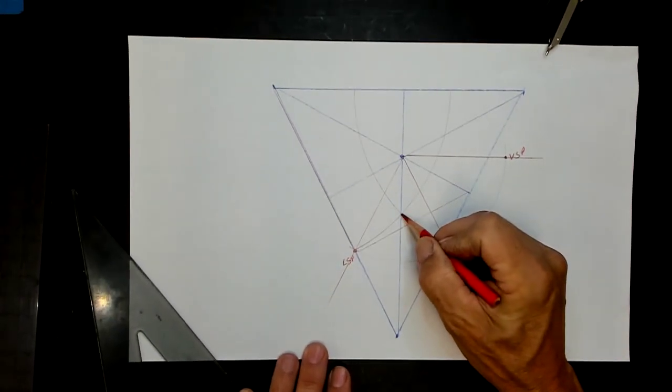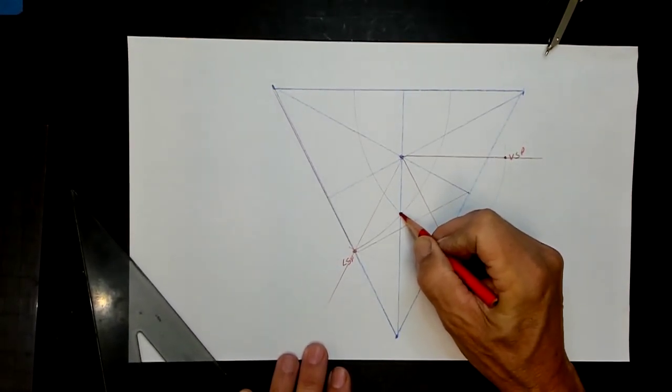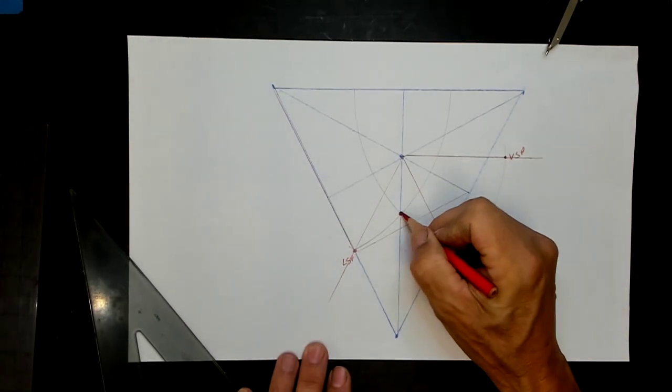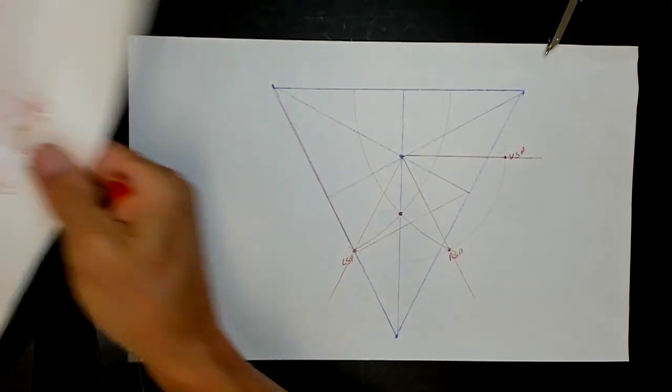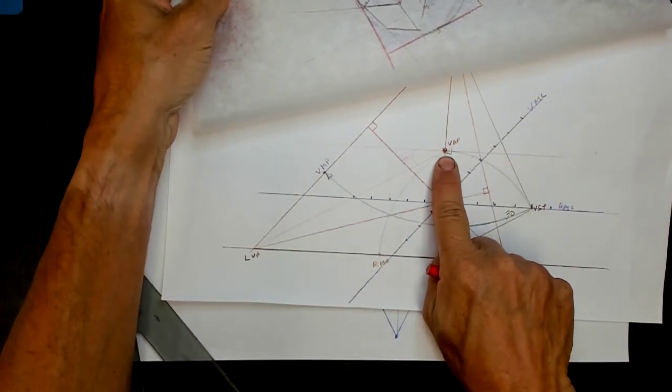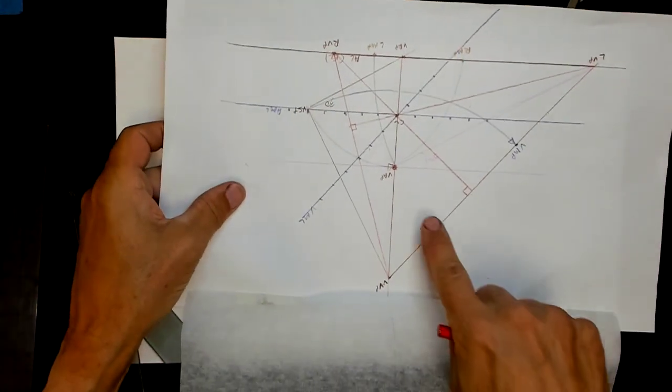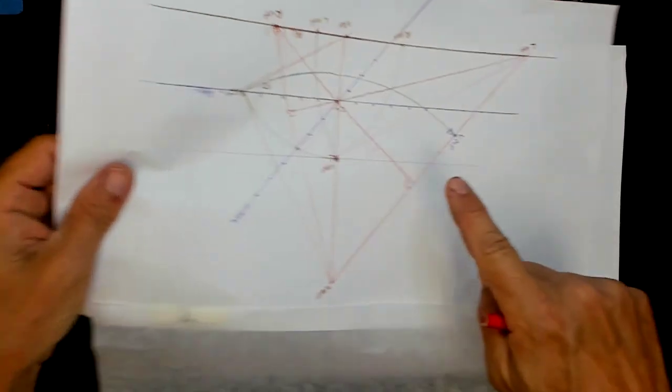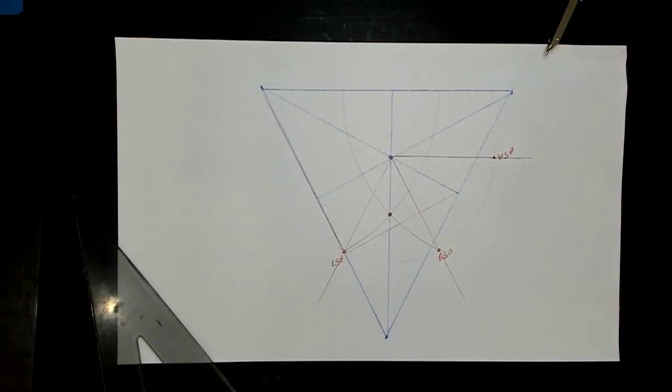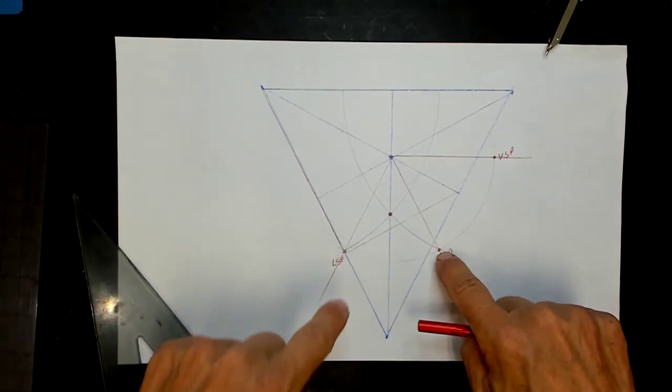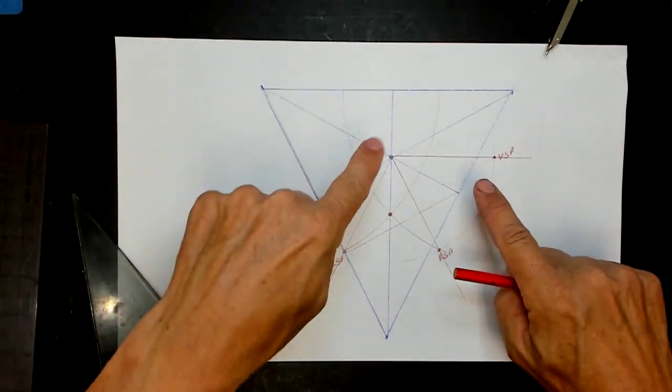So see where these two come together right there. That is this point in a bird's eye view. If I turn this upside down, that is this point. We didn't have these two measuring points, so we couldn't find it this way.